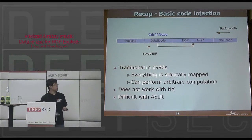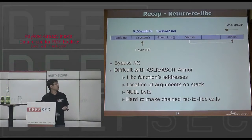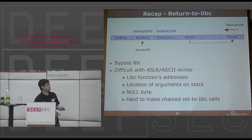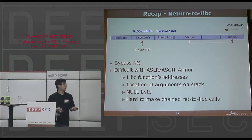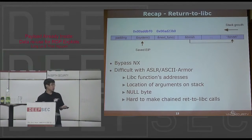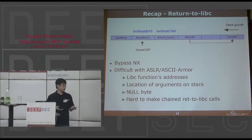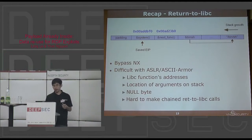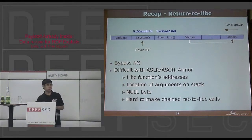This is a recap on basic stack overflow and code injection — I'll skip this. Return-to-libc is a simple technique where you return back to a library function, for example the system function. As mentioned before, this is pretty hard with ASLR and ASCII armor, because the libc function itself is randomized and the stack is also random. So it's not easy to know the location of the argument on the stack, there is the null byte problem, and because of the null byte it's hard to chain return-to-libc calls.